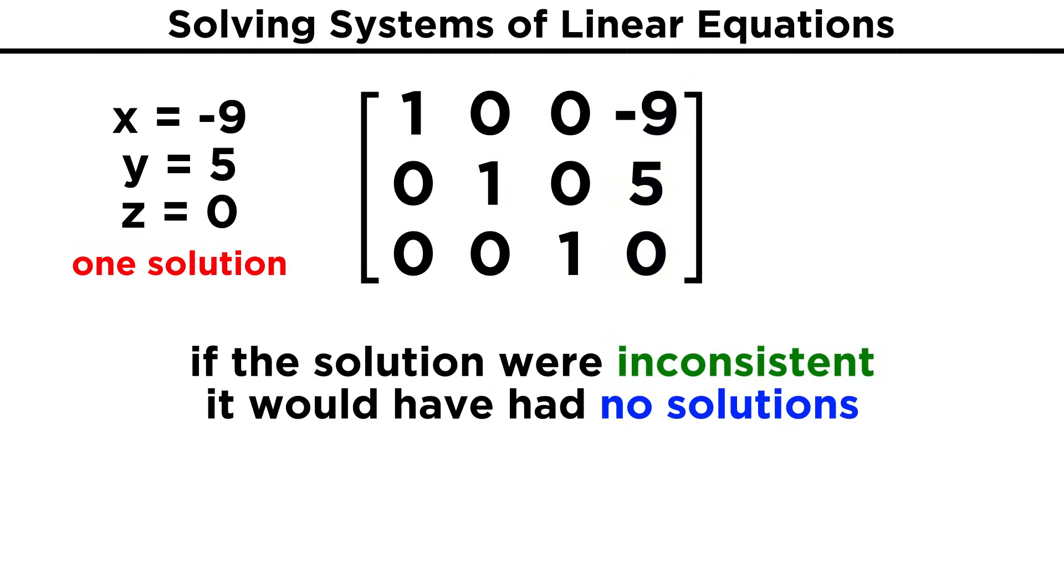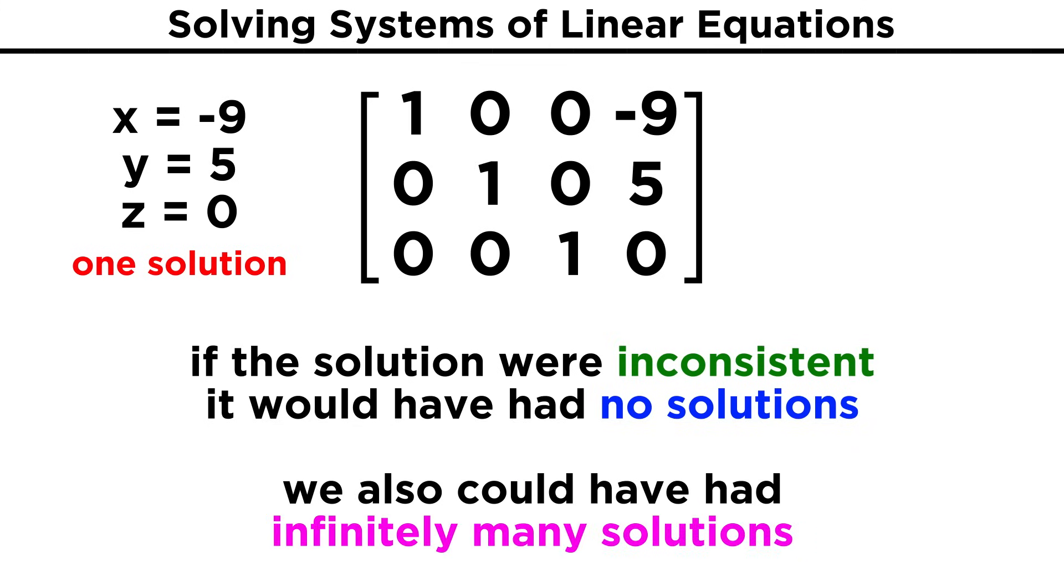Once again, we could have ended up with no solutions if the system was inconsistent, or we also could have ended up with infinitely many solutions, but in this case we got just one.